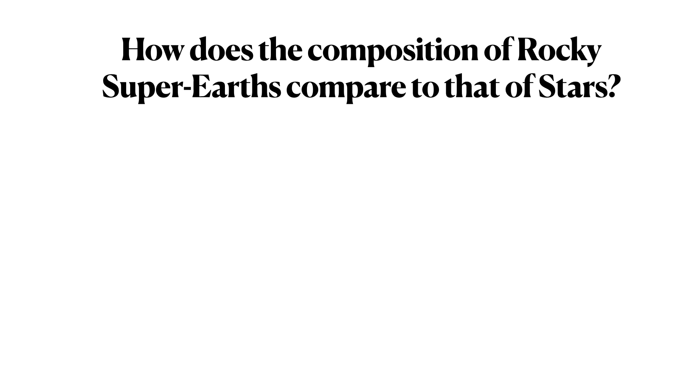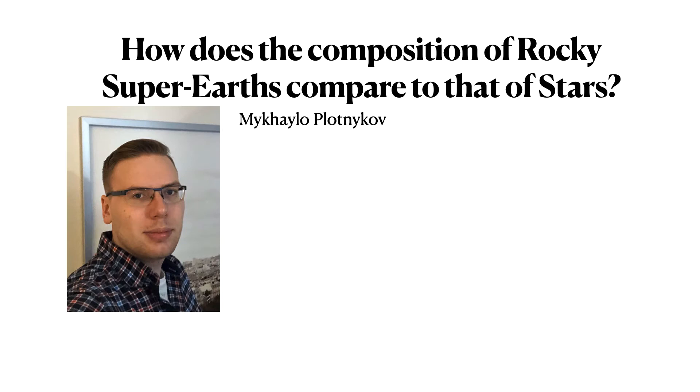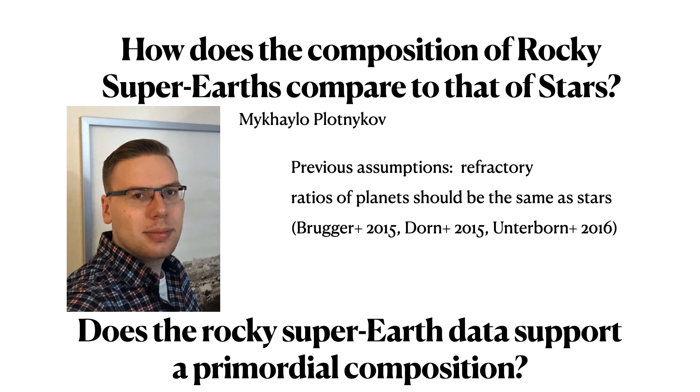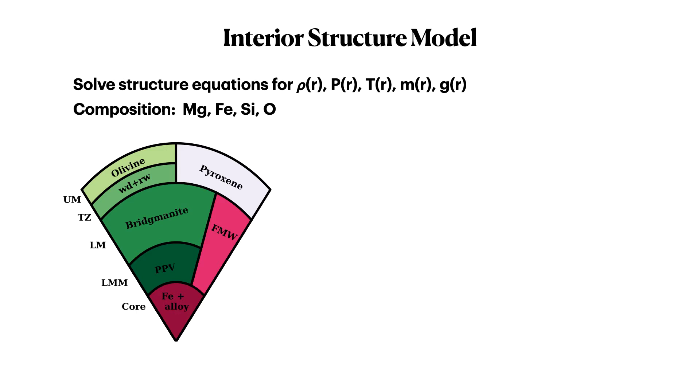And so, we looked at this sample and asked the question, how does the composition of rocky super-Earths compare to that of stars? And I want to introduce the student that did the heavy lifting of this work. This is Michael Plotnikoff, and he did fantastic work answering a question that was inspired by previous assumptions put forward by different groups. In an attempt to reduce the degeneracy inherent on these low-mass planets, other works had suggested that the refractory ratios of planets should be the same as that of stars. And so, we wanted to invert the suggestion into a question and ask if the data supported this primordial composition for super-Earths.